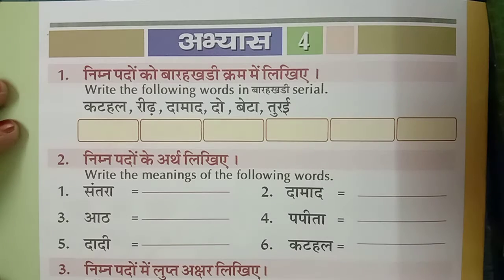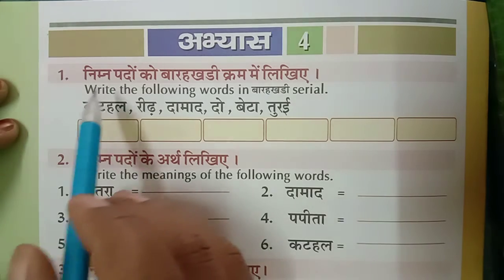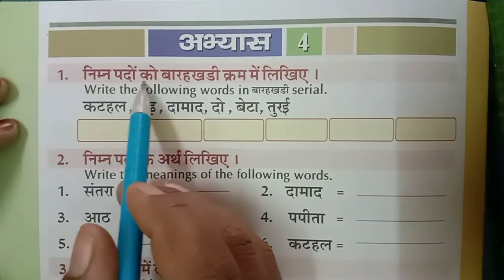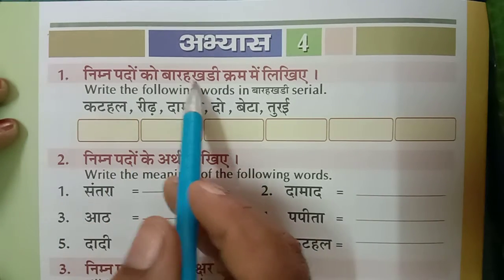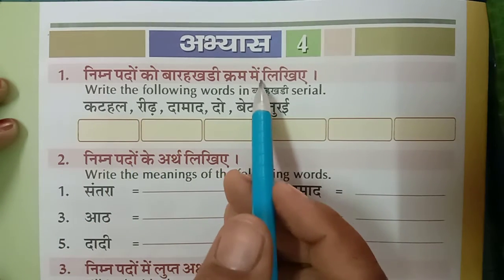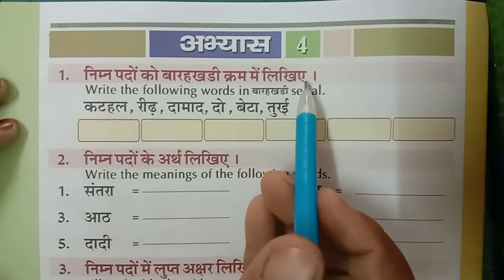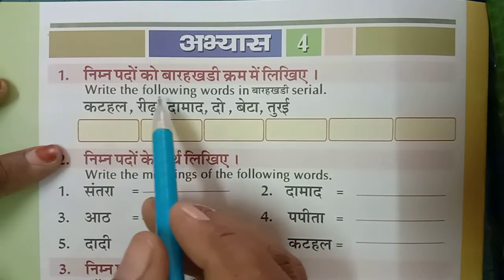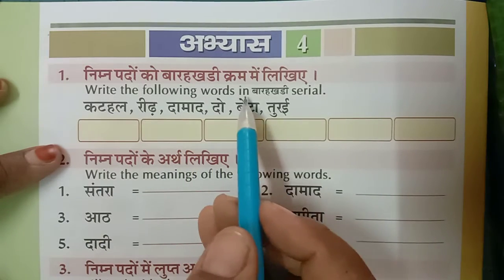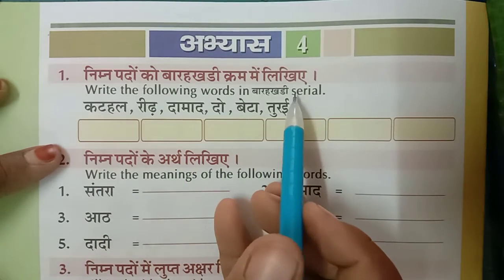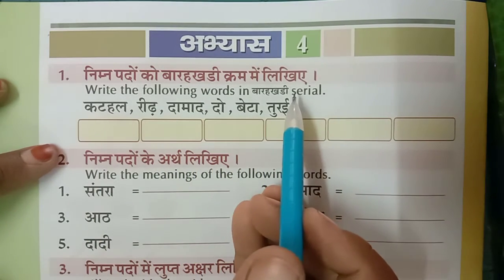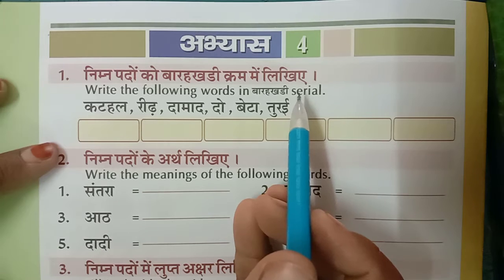In page number 40, Abhyas 4, 1st Roman: Nimna padon ka barakhadi ke kramroop mein likhiye — write the following words in barakhadi serial order. Okay children.